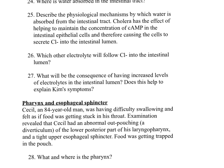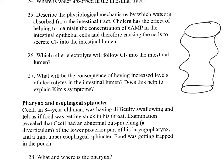Question twenty-six: which other electrolytes will follow chloride into the intestinal lumen? Cholera maintains elevated cyclic AMP in intestinal epithelial cells, causing cells to secrete chloride ions into the lumen. Chloride secreted into the intestinal lumen produces an electrochemical gradient, and sodium will follow chloride into the lumen. Question twenty-seven: what will be the consequence of increased electrolytes in the intestinal lumen, and does this explain Kim's symptoms? The increased electrolyte concentration changes the direction of the concentration gradient, now favoring the diffusion of water into the lumen, increasing the water content of luminal contents and producing watery diarrhea. The loss of large amounts of water rapidly leads to dehydration.